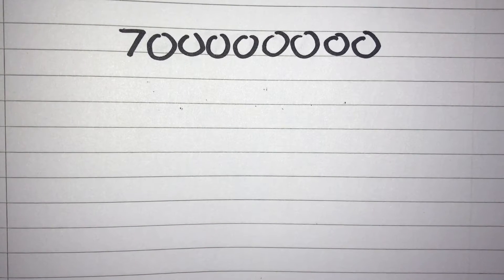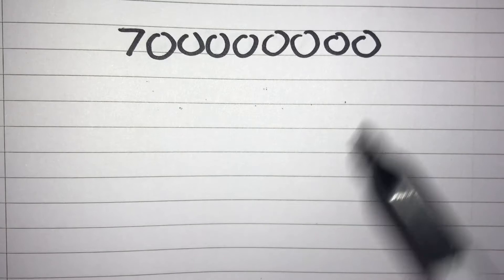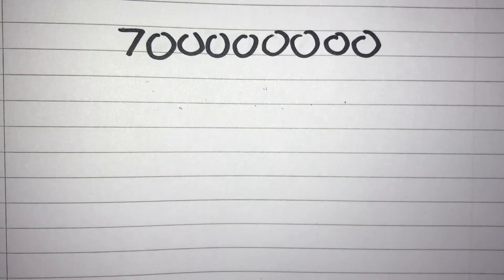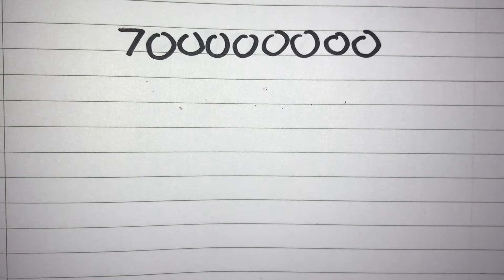We can write both big and small numbers in standard form, and the reason we do this is because big numbers are kind of difficult to work with. So we write them in a more concise form, and the form that we write them in will be a number between 1 and 10 multiplied by 10 to the power of something.